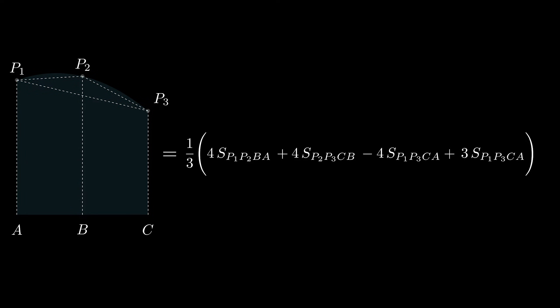Simplifying the equation and substituting the formula for the area of trapezoids, which is the average height times the base. For example, the area under the trapezoid P1, P2, BA is y1 plus y2 by 2 times delta x, and the area under the trapezoid P1, P3, CA which spans two intervals is y1 plus y3 by 2 times 2 delta x.